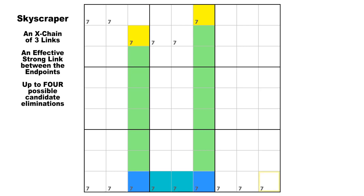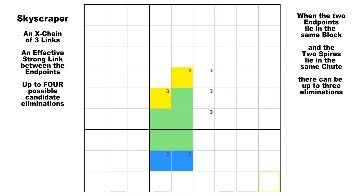Remember, the uneven conjugate pairs are thought to look like two tall buildings of different heights, as if you were looking at the skyline of Manhattan. This best applies to orientation number one where the spires are upright. But you also have to be able to imagine this image rotated 90 degrees to the left or right, or rotated 180 degrees where it looks upside down. If the two endpoints of the skyscraper happen to lie in the same block, meaning the two spires lie in the same chute, this will still work, but there will be a maximum of three candidate eliminations instead of four.